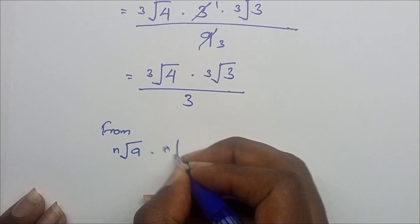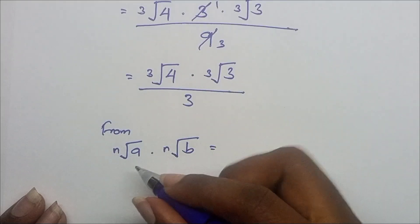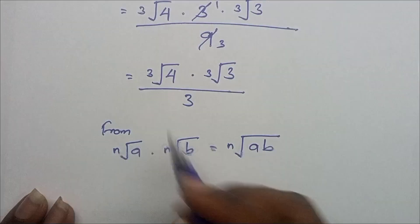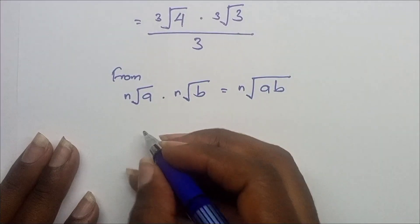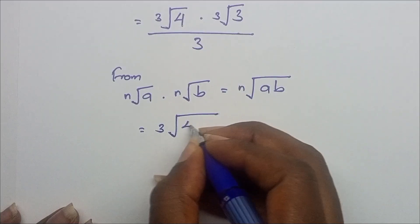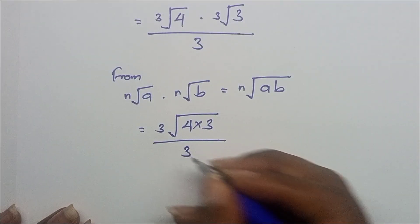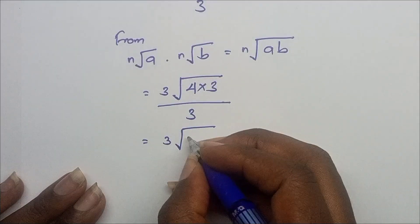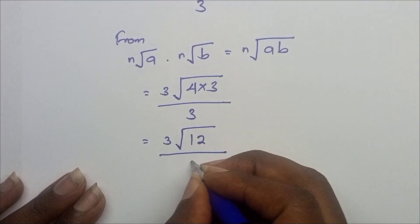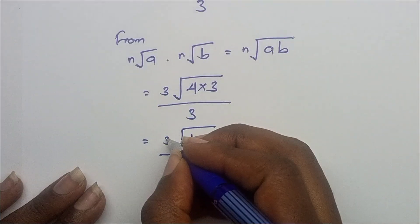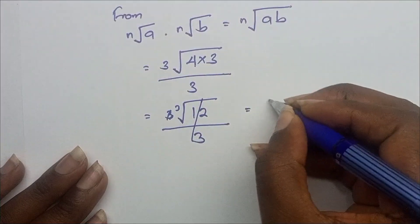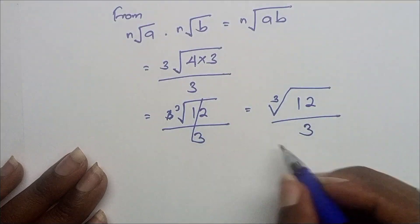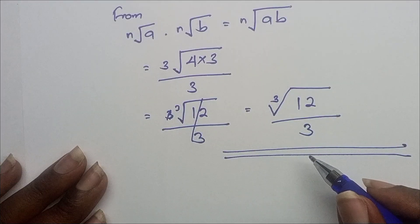Using the rule that nth root of a times nth root of b equals nth root of ab, we combine cube root of 4 and cube root of 3 to get cube root of 12. So the final simplified answer is cube root of 12 over 3.